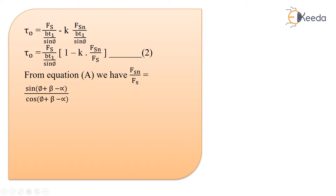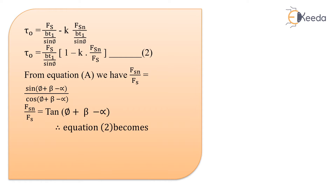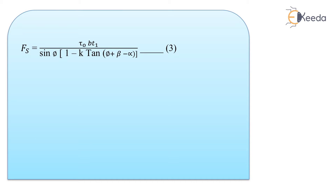So Fsn by Fs equals tan of (phi plus beta minus alpha). Equation 2 can then be written as: tau_0 equals Fs divided by (Bt1/sin phi) into bracket 1 minus k times tan of (phi plus beta minus alpha). From this, the shear force Fs equals tau_0 Bt1 divided by sin phi into bracket 1 minus k tan(phi plus beta minus alpha).